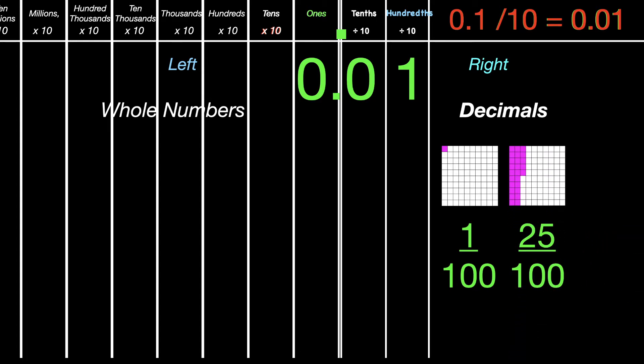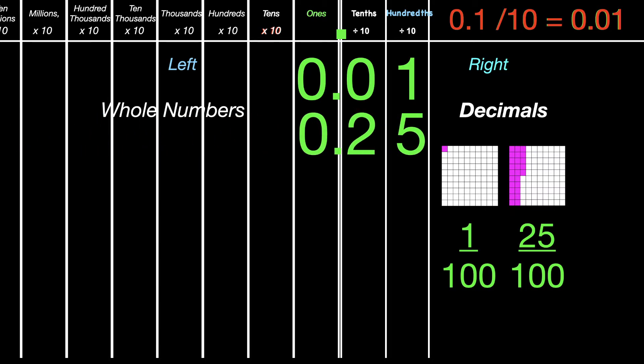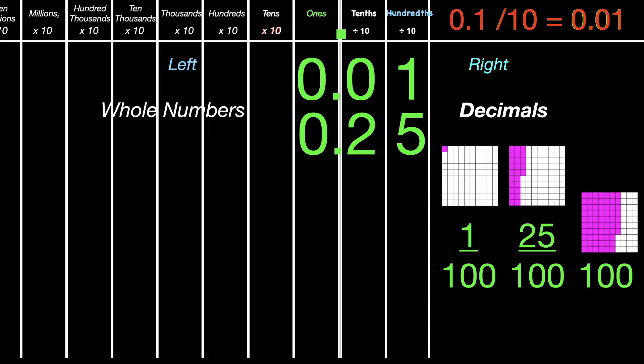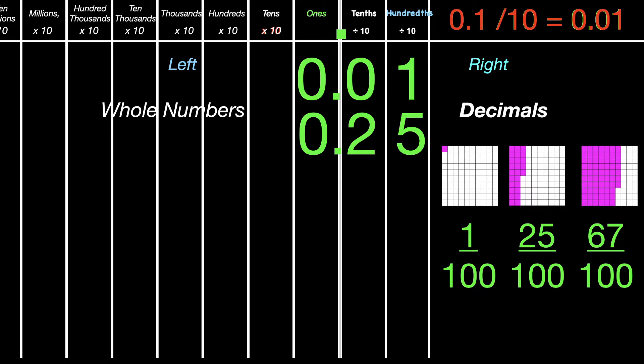This would be twenty-five hundredths. So we would write that as zero decimal point two five. But it would be read as twenty-five hundredths. That model is sixty-seven hundredths. In decimal form, we would write that as zero decimal point six seven.